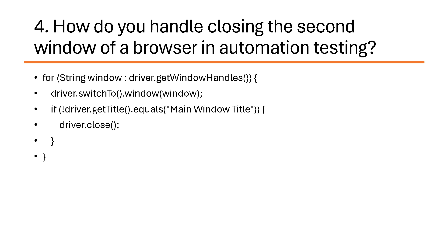The fourth question: how do you handle closing the second window of a browser in automation testing? This question gets asked many times. Here is the syntax: use a for loop iterating over `driver.getWindowHandles()`. Inside the loop, call `driver.switchTo().window(window)`. Then check `if (driver.getTitle().equals(mainWindowTitle))` — if it does not match, call `driver.close()`. This will close the second window.